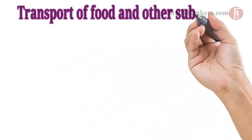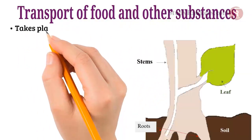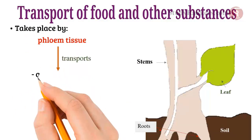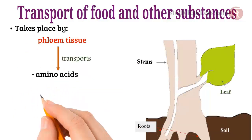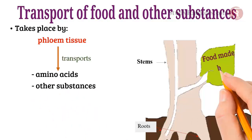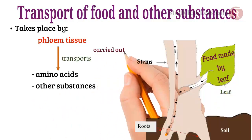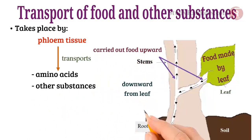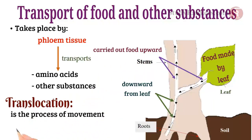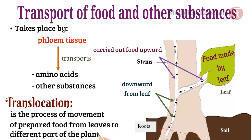Transport of food and other substances takes place by phloem tissue. Phloem transports amino acids and other substances. The food made by the leaf is carried upward and downward from the leaf. Translocation is the process of movement of prepared food from leaves to different parts of the plant.